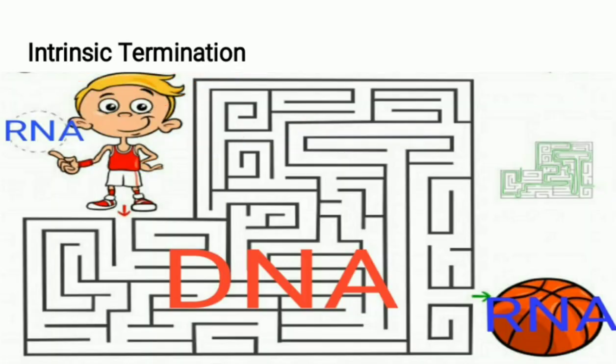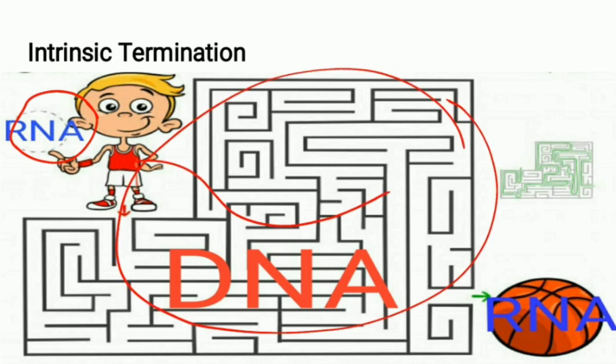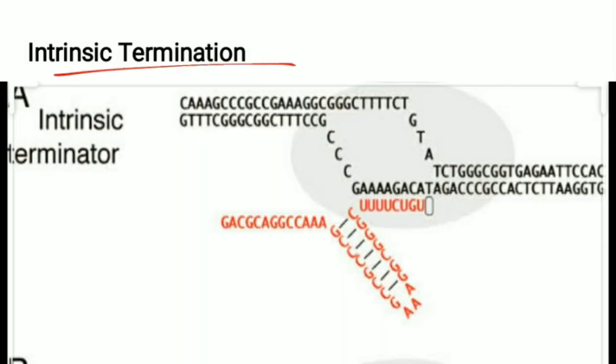There are two types of termination: intrinsic termination and rho-dependent termination. In intrinsic termination, there are intrinsic mechanisms that terminate transcription and the mRNA is released from the DNA — like a ball coming out of a maze on its own.